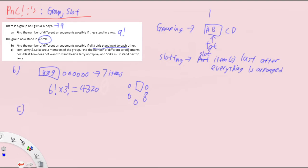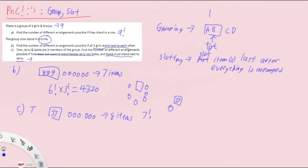Tom, Jerry, and Spike are three members of the group. Find the number of different arrangements if Tom does not want to stand beside Jerry nor Spike, and Spike must stand next to Jerry. Since Spike must stand next to Jerry, we group Spike and Jerry together. Tom does not want to stand beside Jerry or Spike, so Tom is held out. We are left with the three girls, three other boys, and the Spike-Jerry group — eight items in total. Since they are still in a circle, you might try seven factorial, but this wouldn't work because there would be cases where Tom ends up right beside the group.